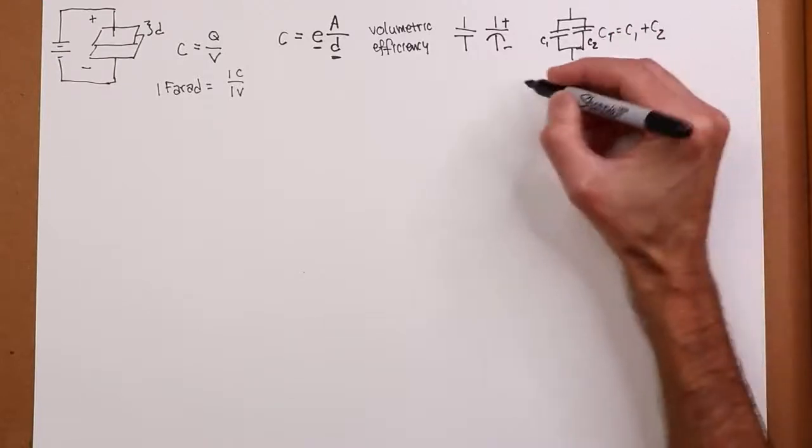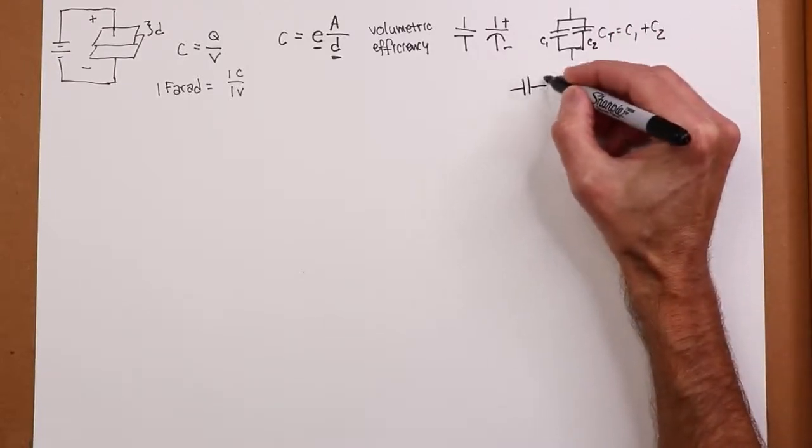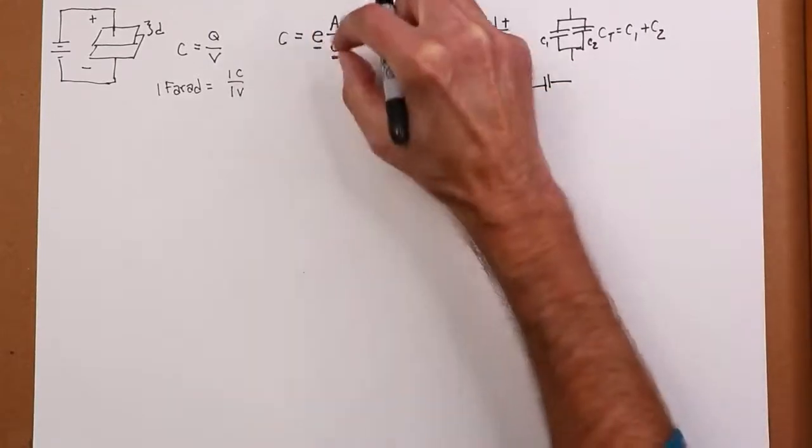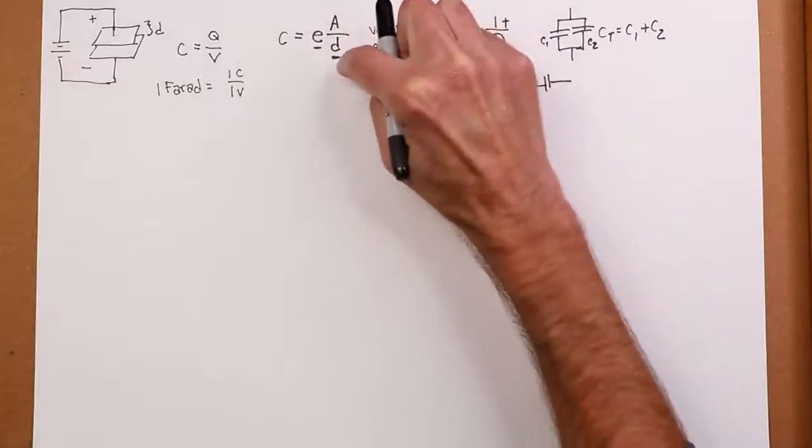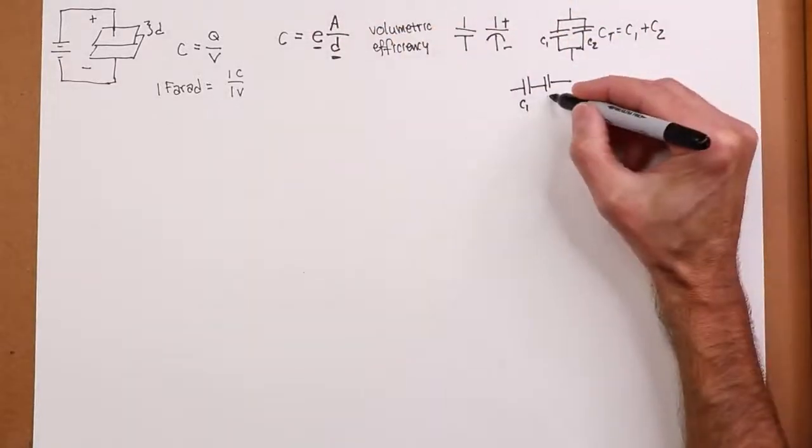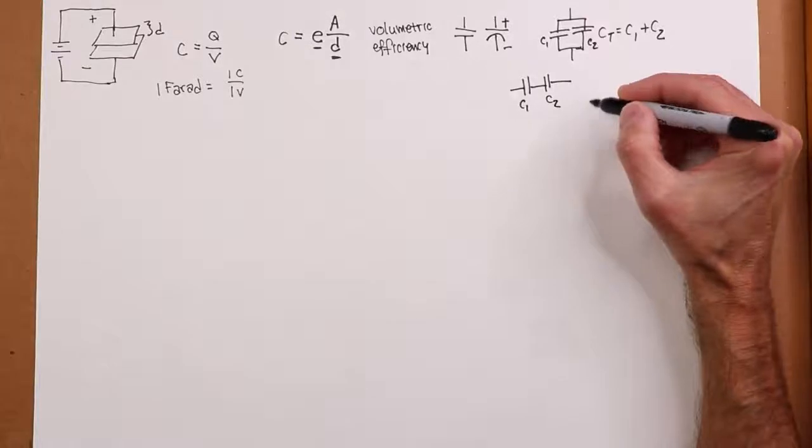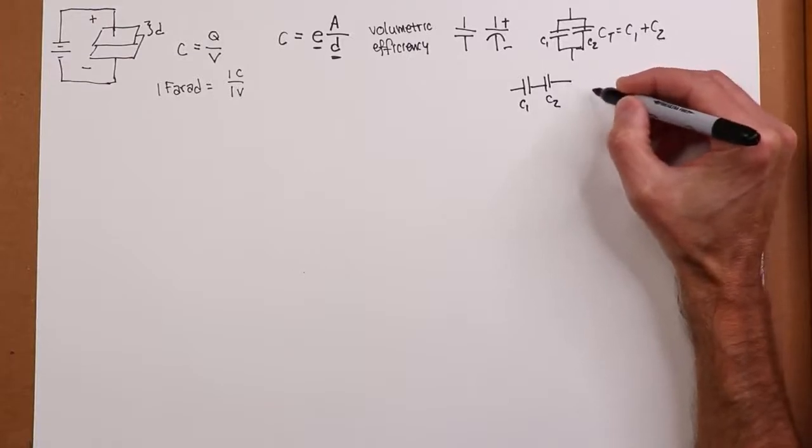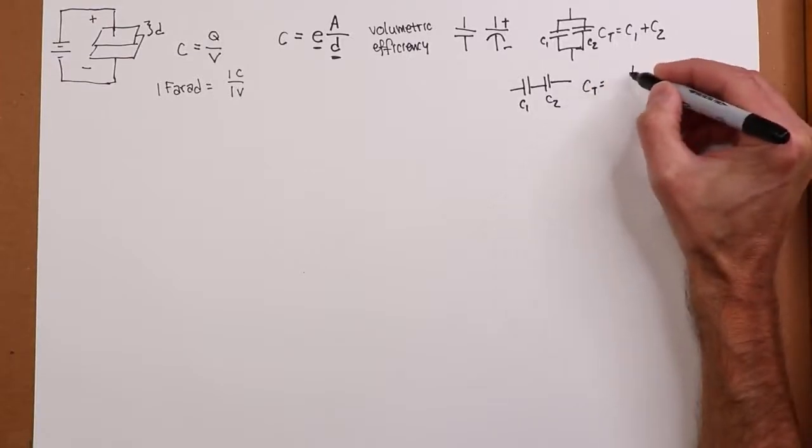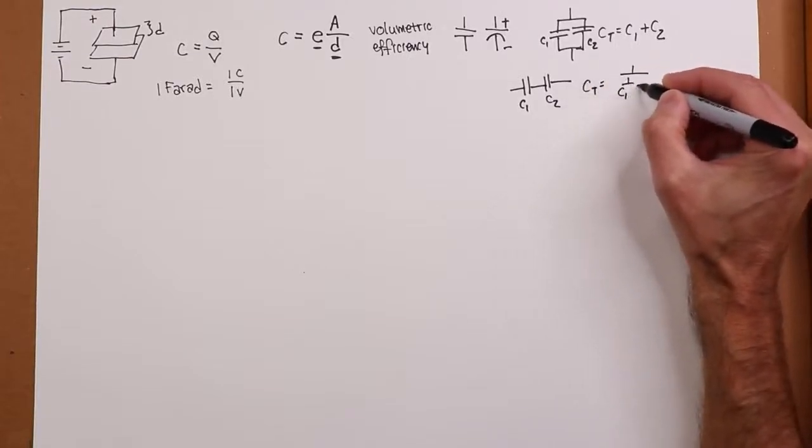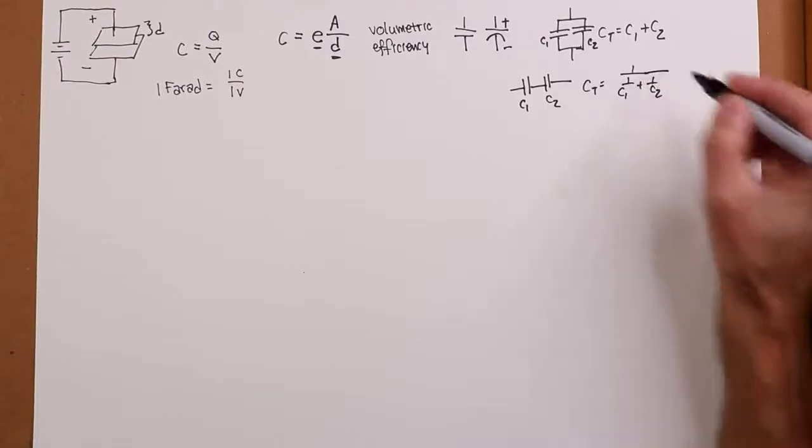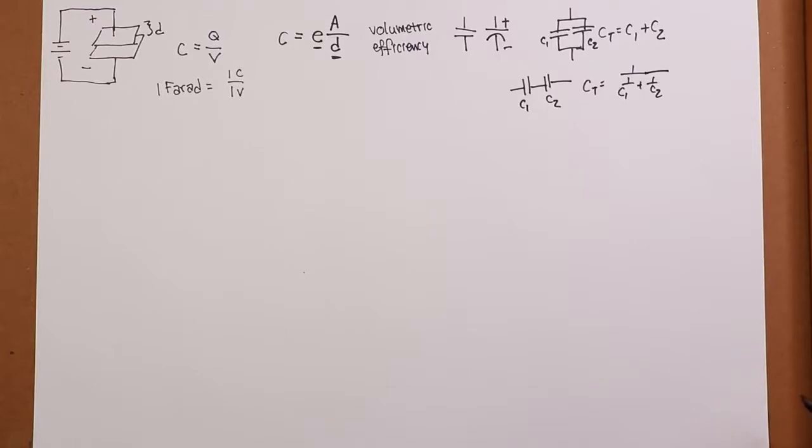On the other hand, if you put them in series, the analogy would be like increasing the plate spacing. So you get less capacitance when you do it this way. So this is treated the way resistors in parallel are treated. In other words, Ct is 1 over C1 plus 1 over C2, 1 over C3, and so on and so forth. So that's the basic layout on this.